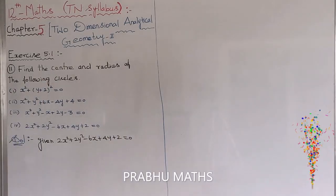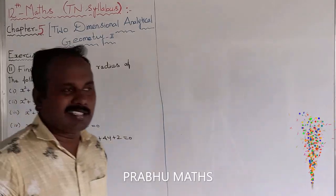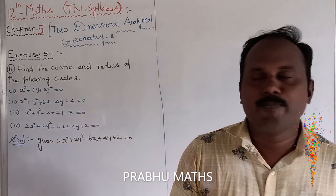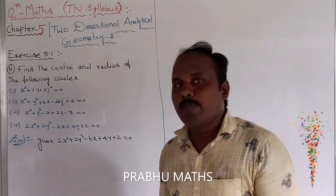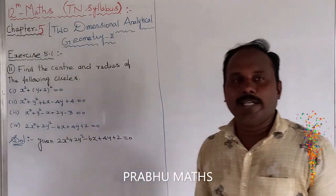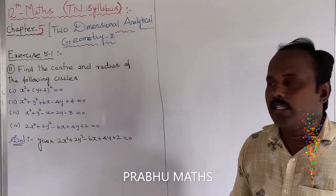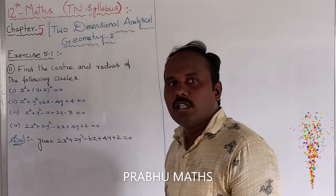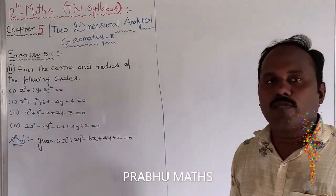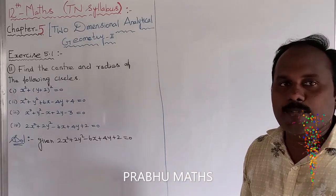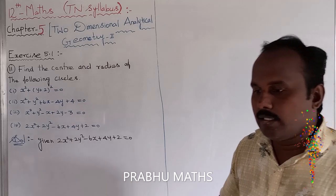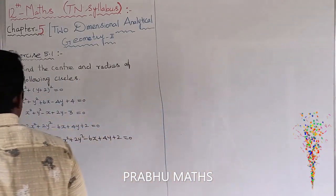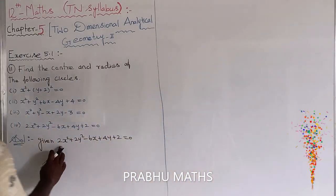We need to find the value of the center and radius. The center is given by the point (minus g, minus f), and the radius is equal to the square root of g squared plus f squared minus c.